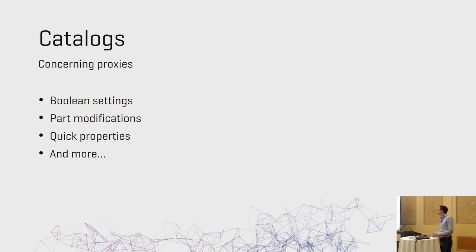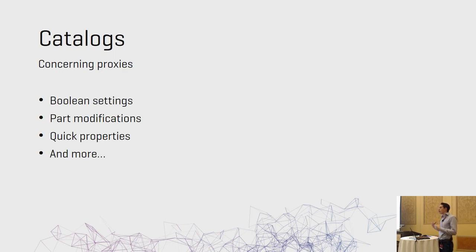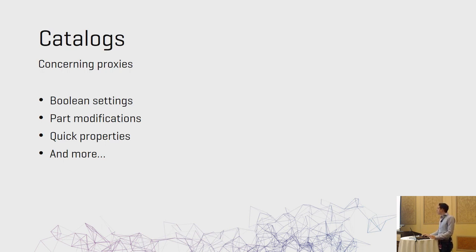Some things we can change through proxies right now include boolean settings — true or false, do we want this or not? We can change the part displayed in build materials, change quick properties, add more quick properties, or change the domains of the quick properties. For example, if we have a certain model with a certain setting, we might not want to show all the color options. We can also append validations.